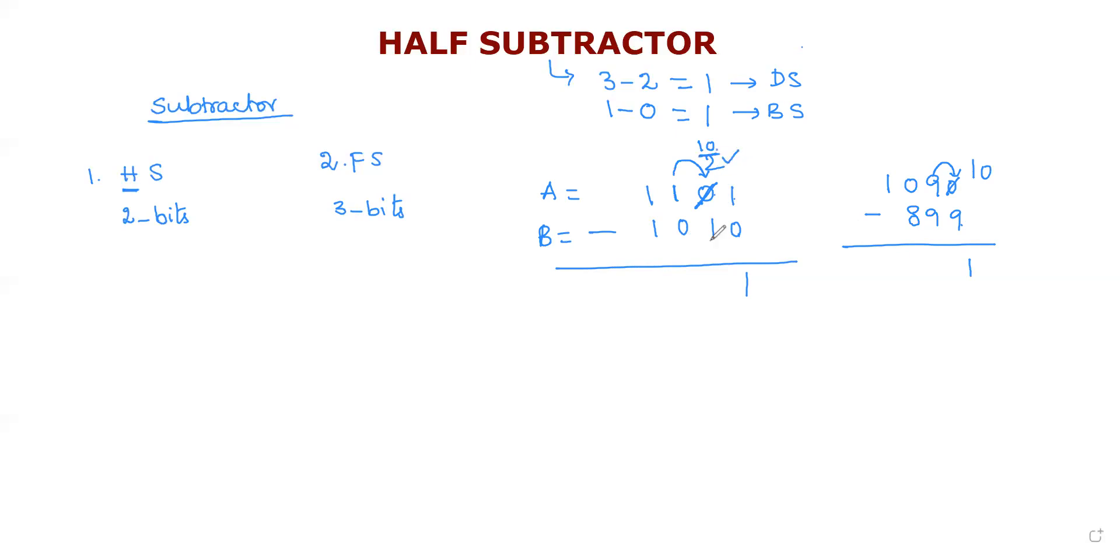The borrow is one. Here we take the borrow, so here zero becomes two. Zero minus one, we take the borrow. So we see zero, we take zero. One minus one is zero. This is my result.